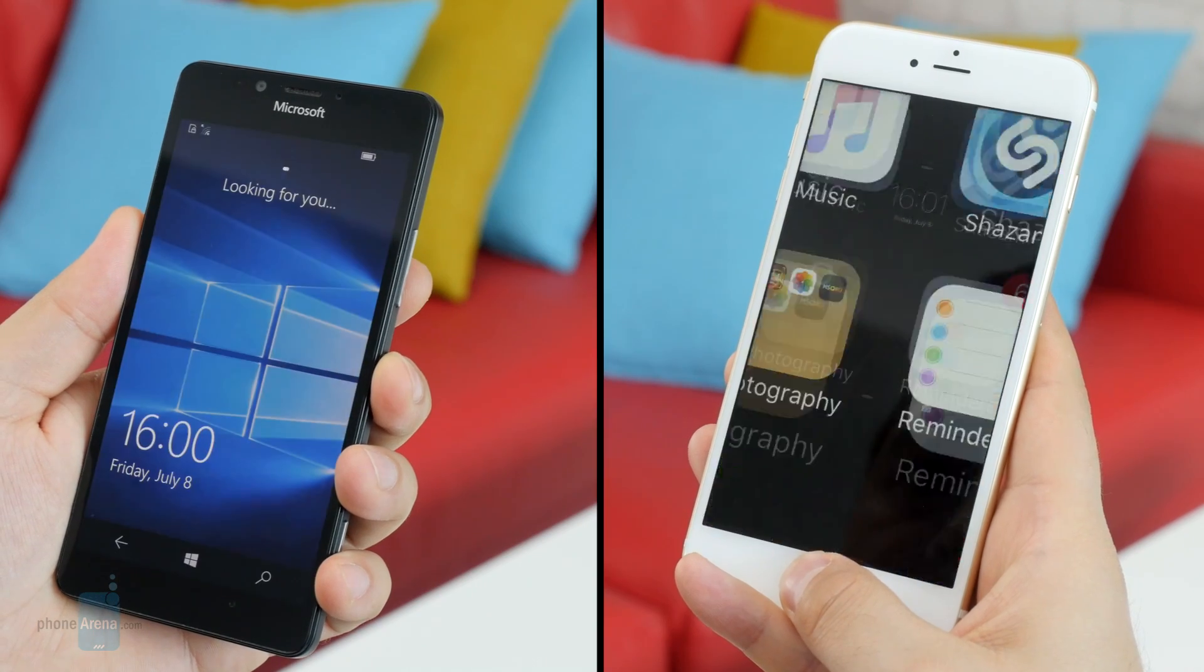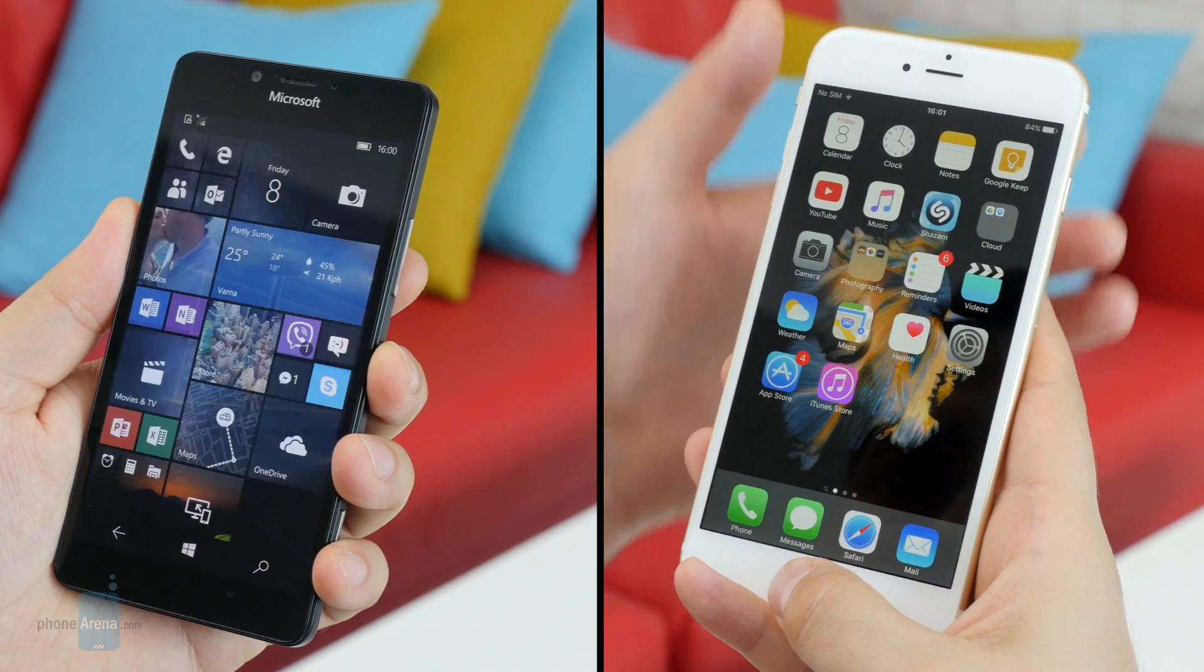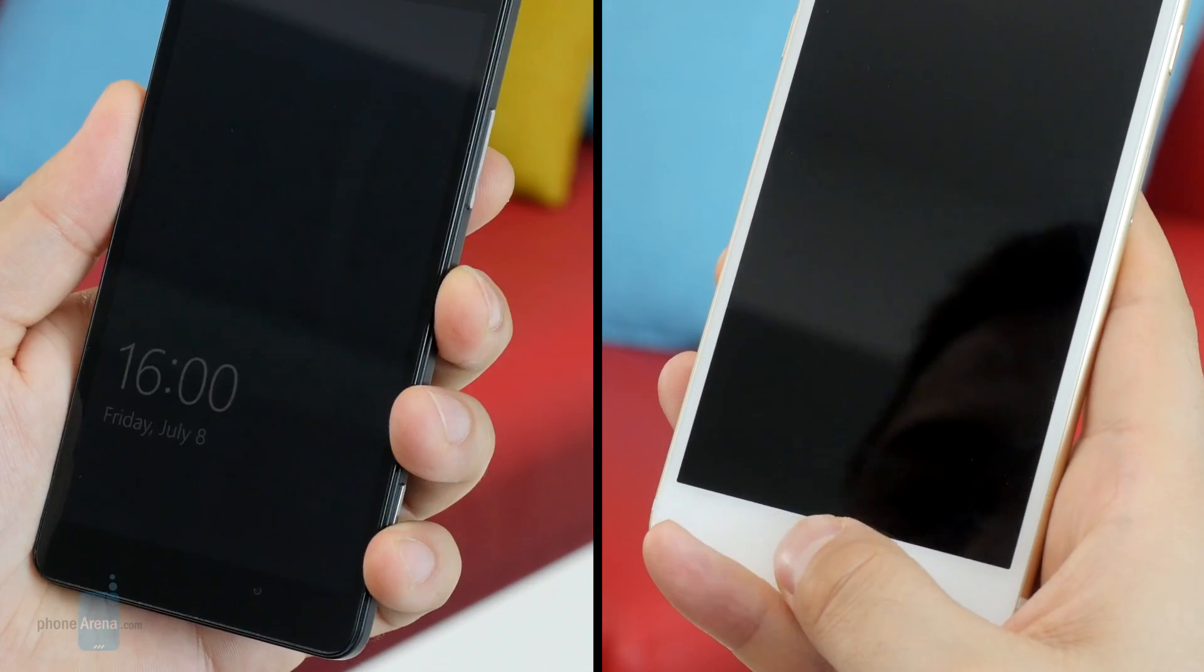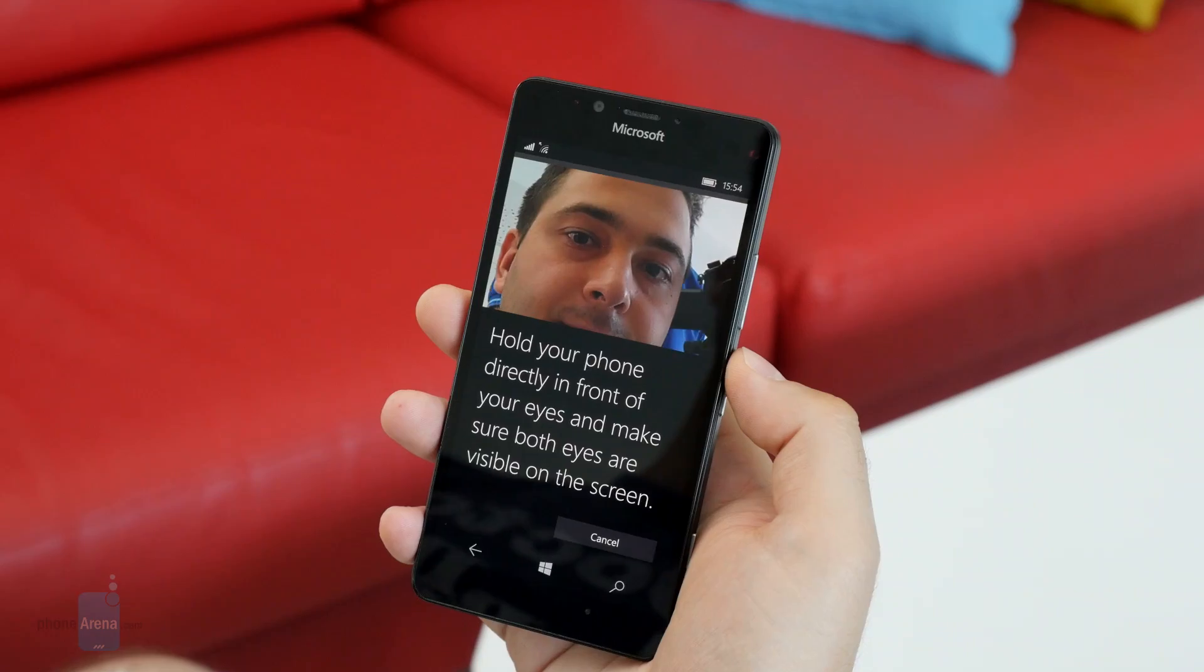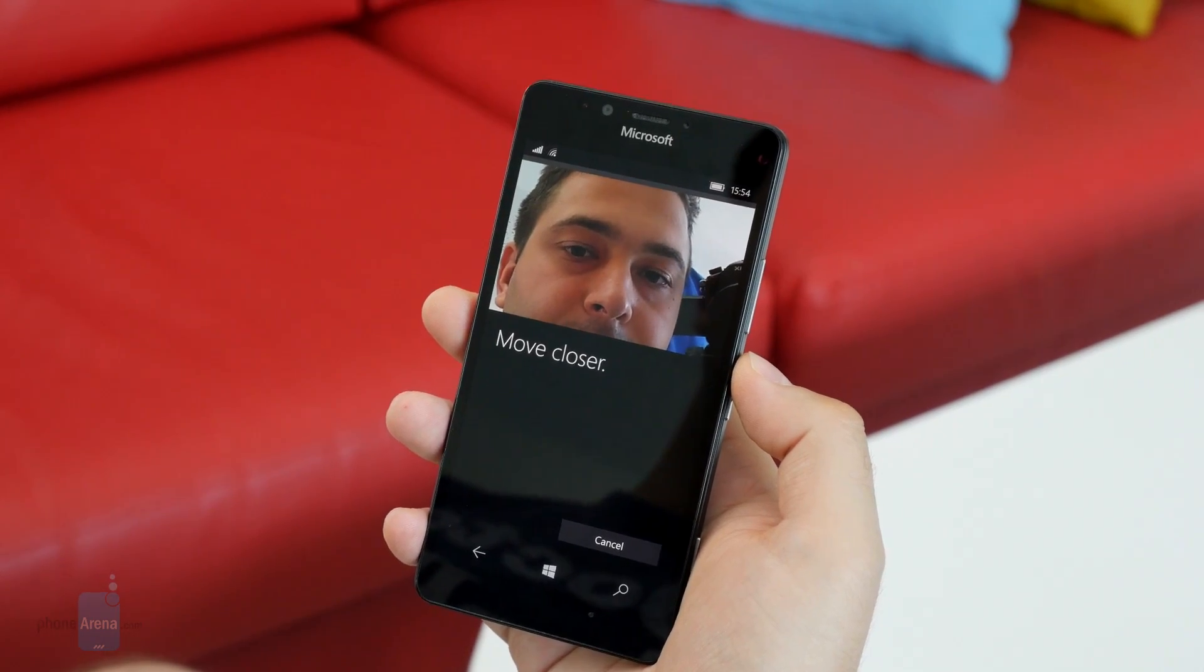In fact, the iris scanners that we've tested are not better compared to a good old fingerprint reader. For example, the one on the Lumia 950 is slower and doesn't work if you're holding the phone too far away from your face.